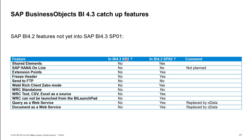Why go with 4.3 Service Pack 1 or Service Pack 2? Some capabilities missing in SP1 will be back in SP2: shared elements, extension points, freeze header, and the Web Intelligence rich client standalone mode. The Web Intelligence rich client itself has been part of the client setup since 4.3 SP0. There are also cumulative improvements planned for SP2, which Christian will show in a moment.